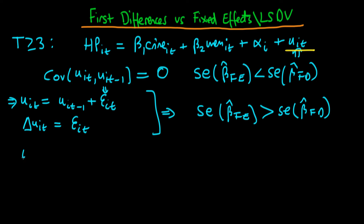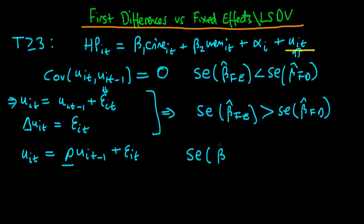What about the circumstance where we don't have quite a random walk but still have some AR(1) process in the errors? So u_it equals rho times u_{i,t-1} plus epsilon_it. It's hard to evaluate the difference between the two estimators in this case — it depends on rho. If rho is close to 1 we're better off using first differences; if rho is close to 0 we're better off using fixed effects. So the answer here is that we should actually estimate both the first differences estimator and the fixed effects estimator, since we have no way of telling which is better.